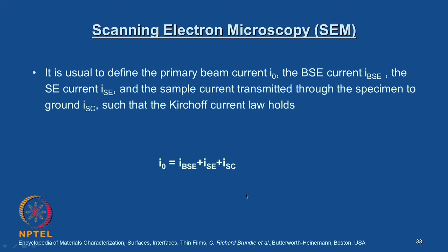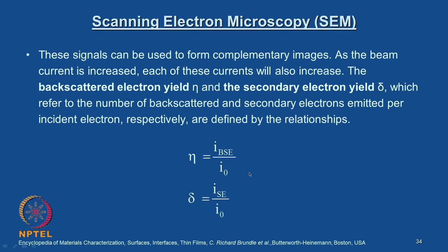It is usual to define the primary beam current I0, the backscattered electron current IBSC, the secondary electron current ISE, and the sample current transmitted through the specimen to ground, such that Kirchhoff's current law holds: I0 = IBSC + ISE + I_sample. We are interested in the signals coming out of the sample — specifically, how the secondary electron signal and the backscattered electron signals are quantified.